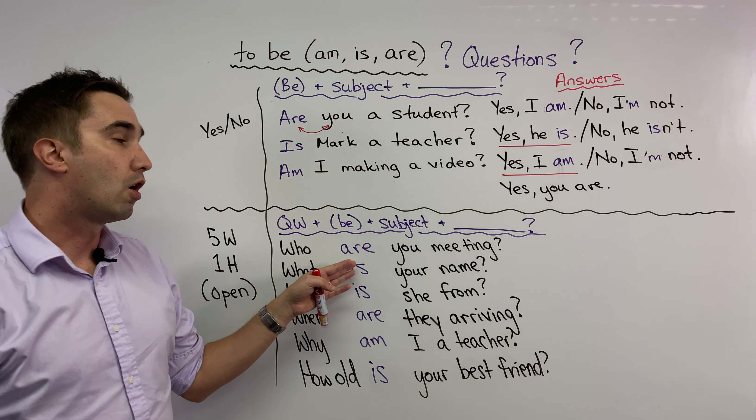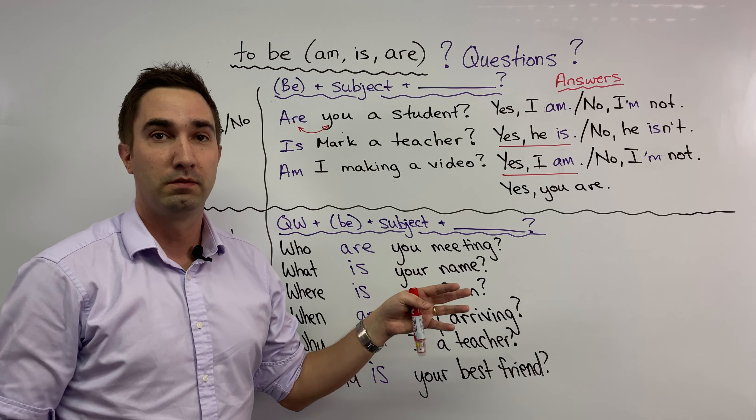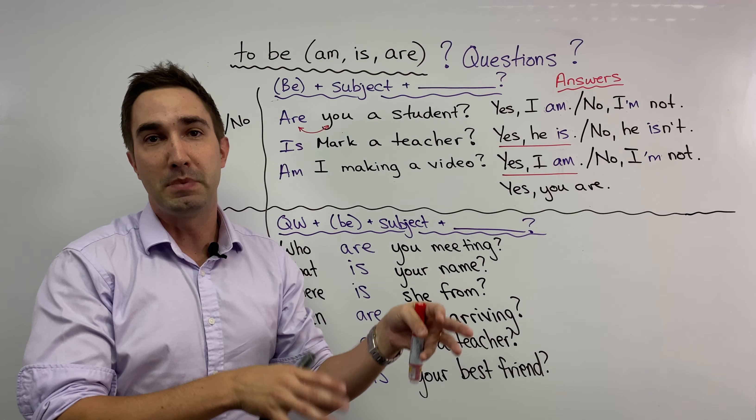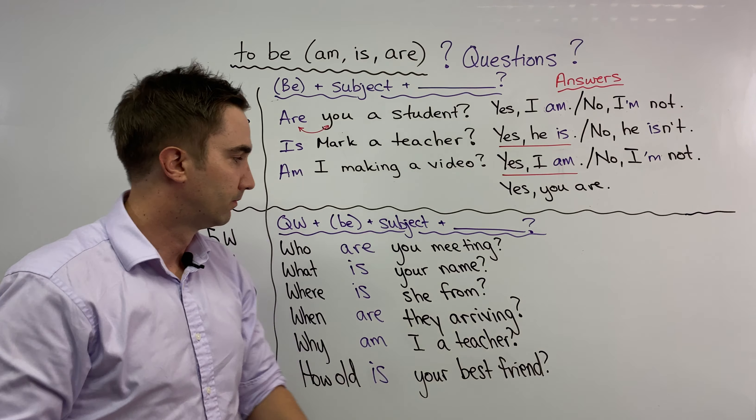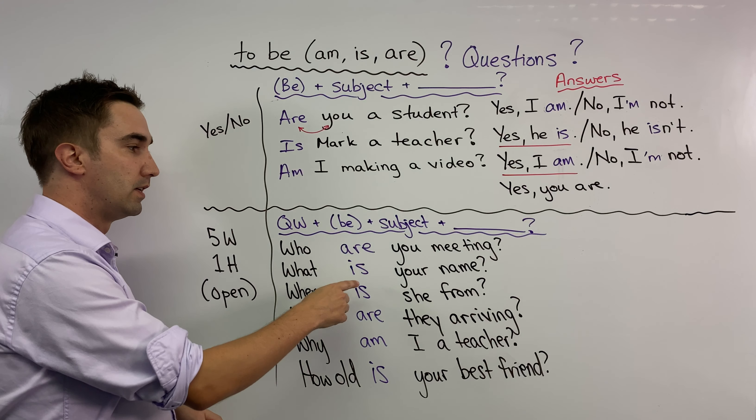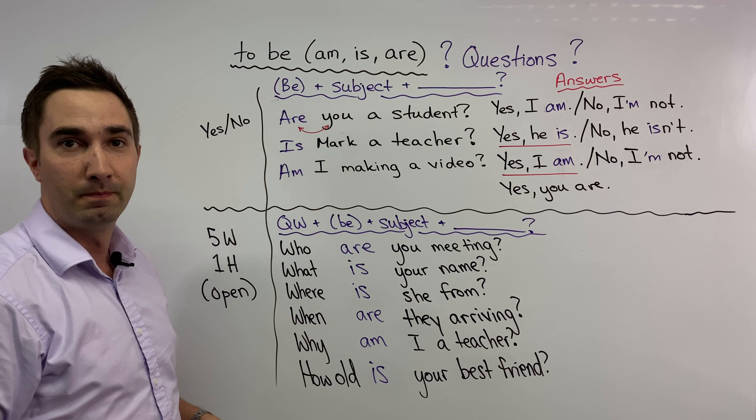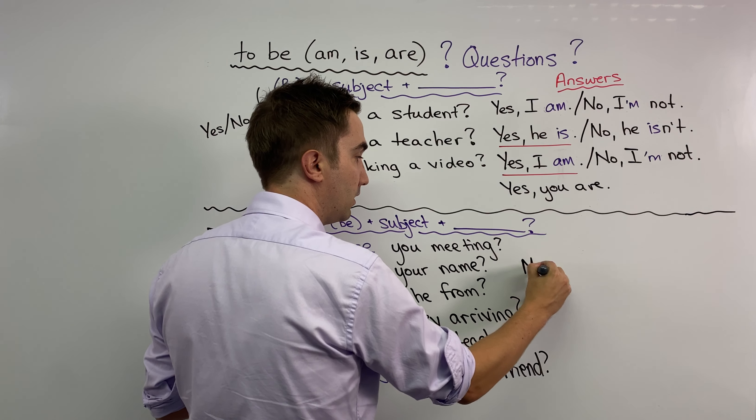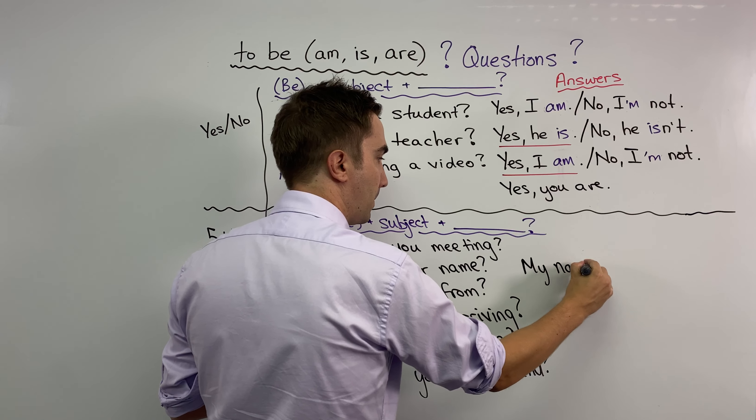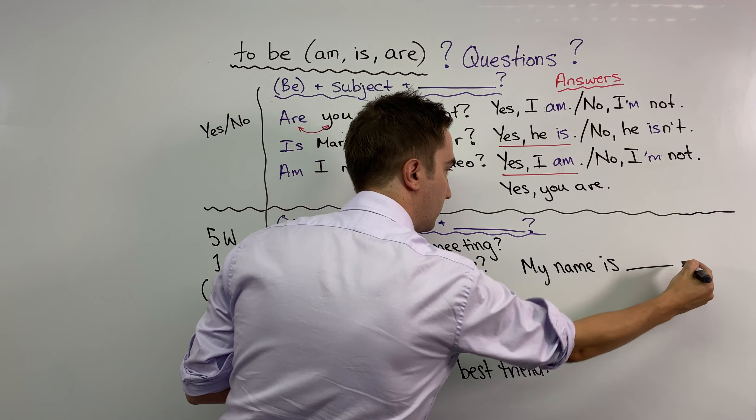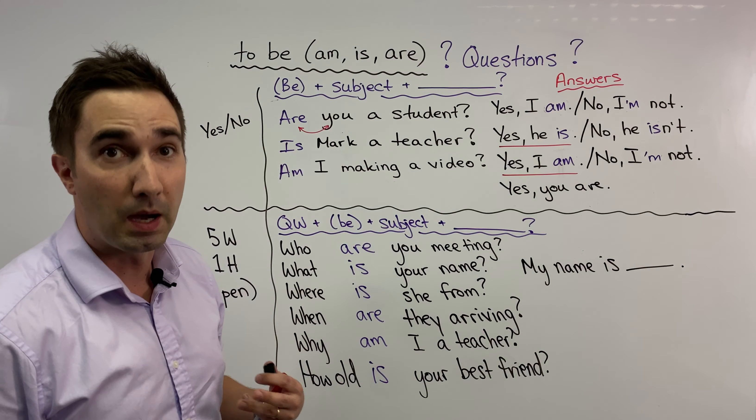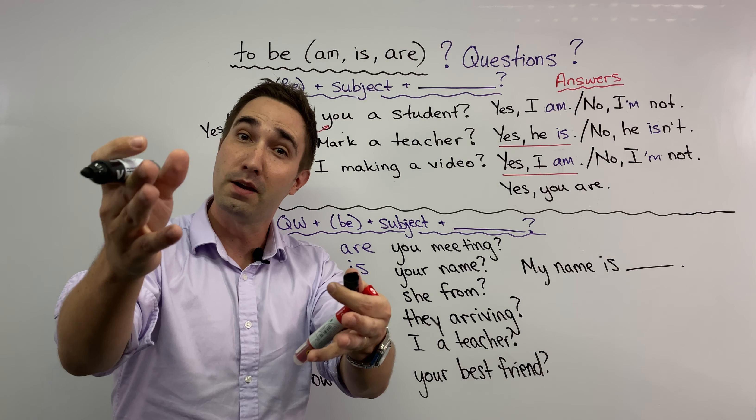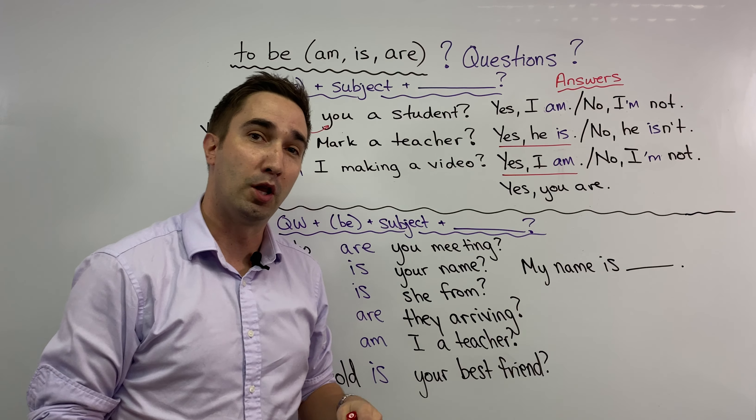I can say who are you meeting? You go back to the positive video. I am meeting my sister. What is your name? If we answer that positively we'd say my name is Matt. My name is whatever your name is. So what is your name? Write that in the comments below.